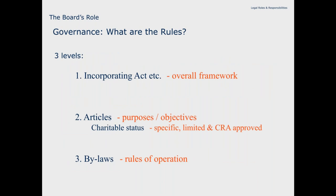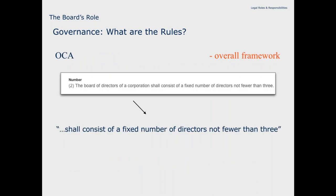The first is the legislation — the incorporating act and other things. These typically set a framework. Here's an example: under the Corporations Act, it says the board of directors of a corporation shall have a fixed number not less than three. And that's true of the CNCA as well — it mandates a minimum number of directors. It doesn't set a maximum, just a minimum.